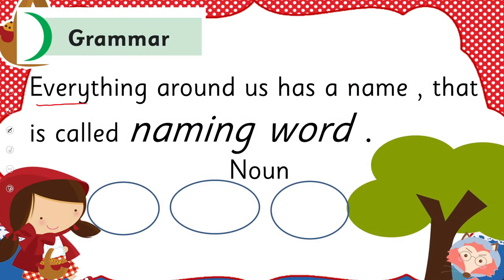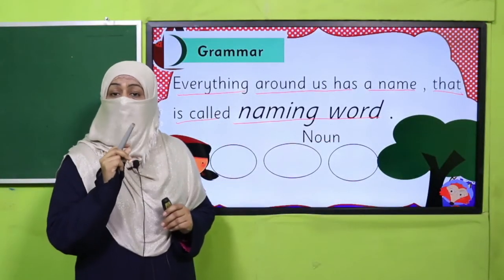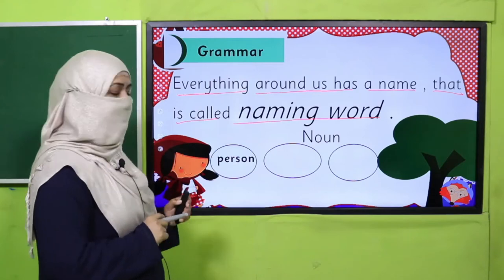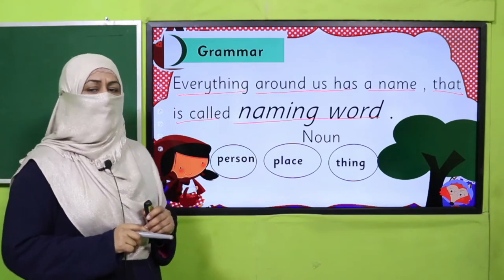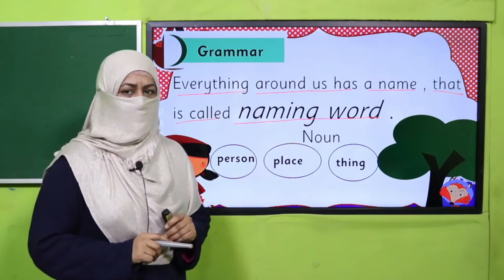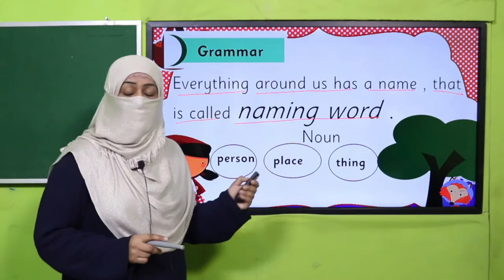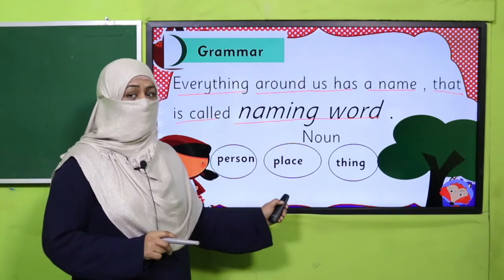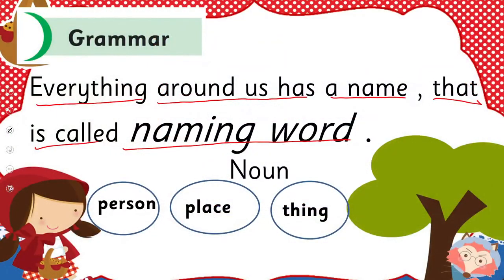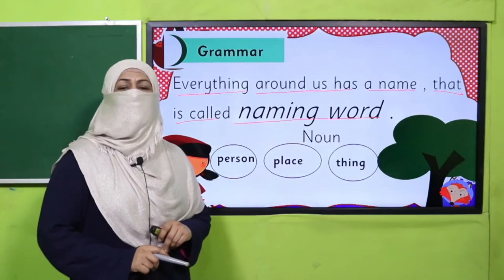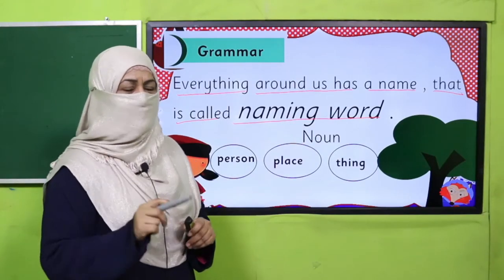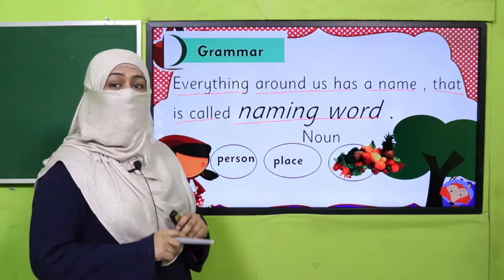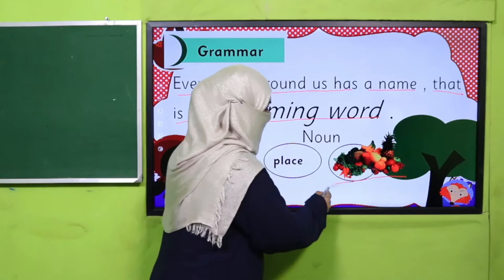Now you just recall and tell me: everything around us has a name, remember? And that is called a naming word. Everything around us which we can feel, hold, touch, or see has a name, and that is called the naming word. This naming word may refer to a person, place, or thing. Now you tell me — what are fruits and vegetables? Are they a person, place, or thing? Pause the video and tell the answer to your teacher. Yes, my dear children — fruits and vegetables are things.